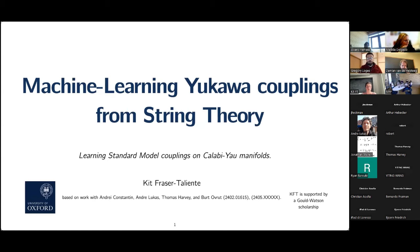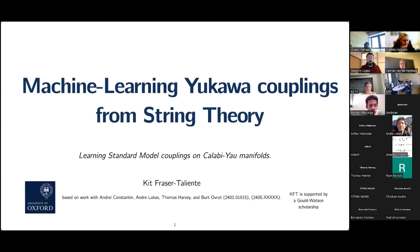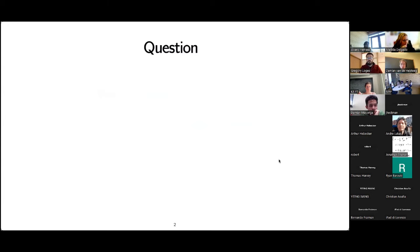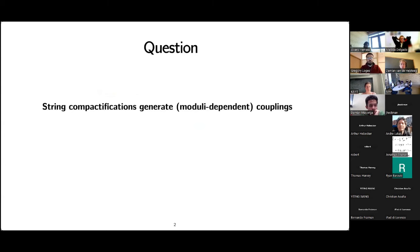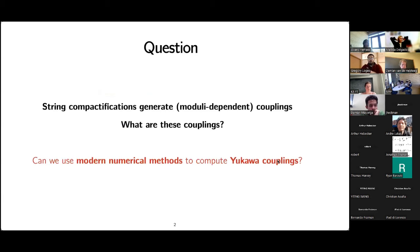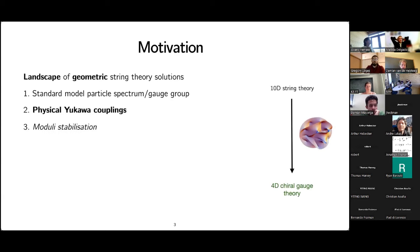This work was done in collaboration with Andre Constant, Andre Lucas, Thomas Harvey, and others. The primary question motivating this work is: string compactifications generate moduli-dependent couplings — what are these couplings? In practice this turns out to be quite hard. Can we use modern numerical methods to compute new Yukawa couplings?